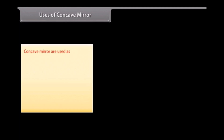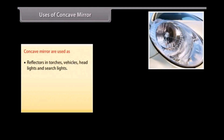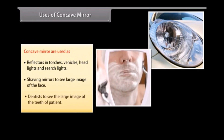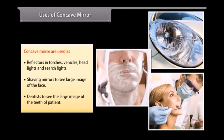Uses of concave mirrors: Concave mirrors are used as reflectors in torches, vehicle headlights, and searchlights. They are also used as shaving or makeup mirrors to see large images of the face, and by dentists to see large images of the teeth of patients.